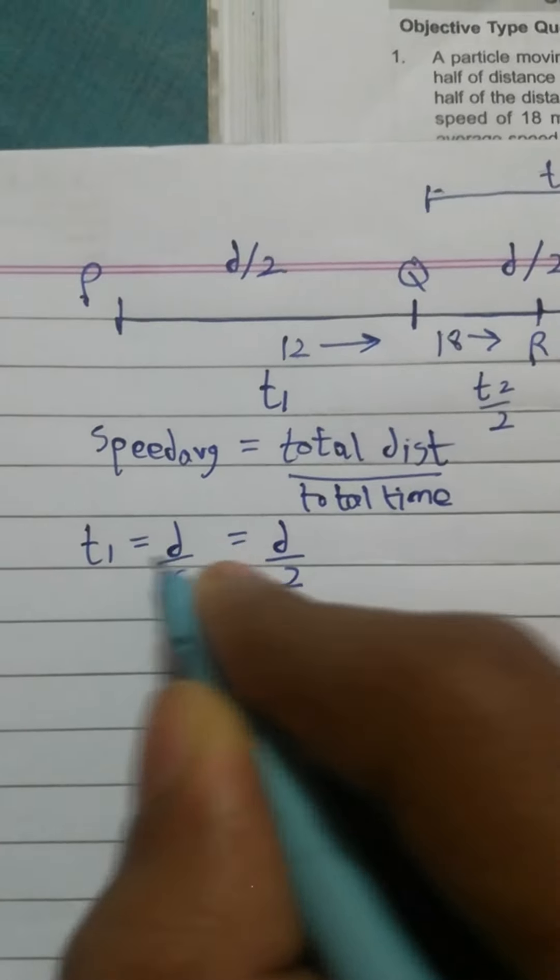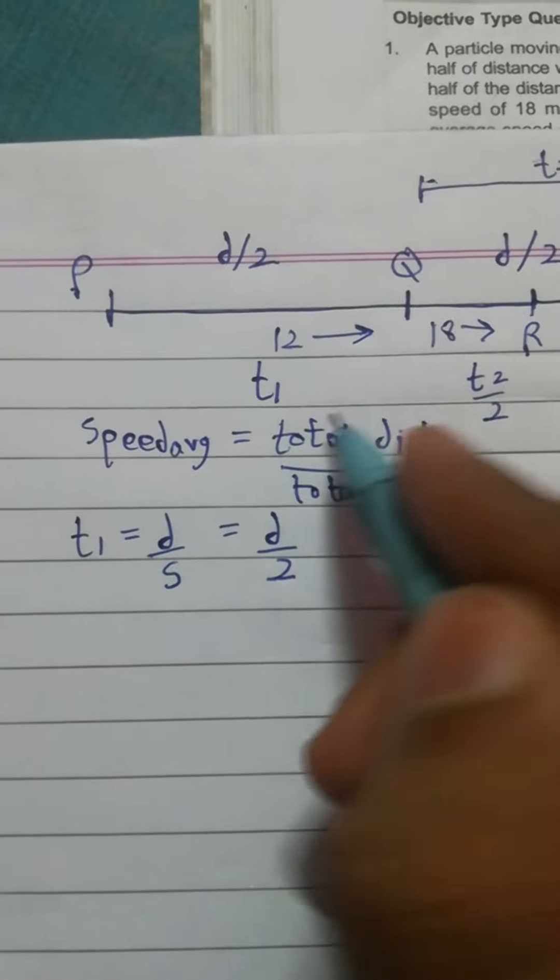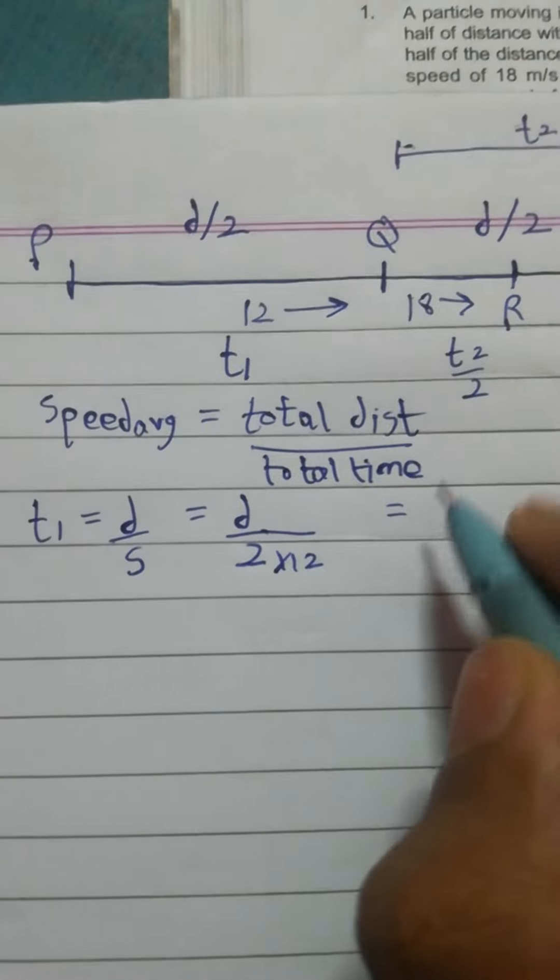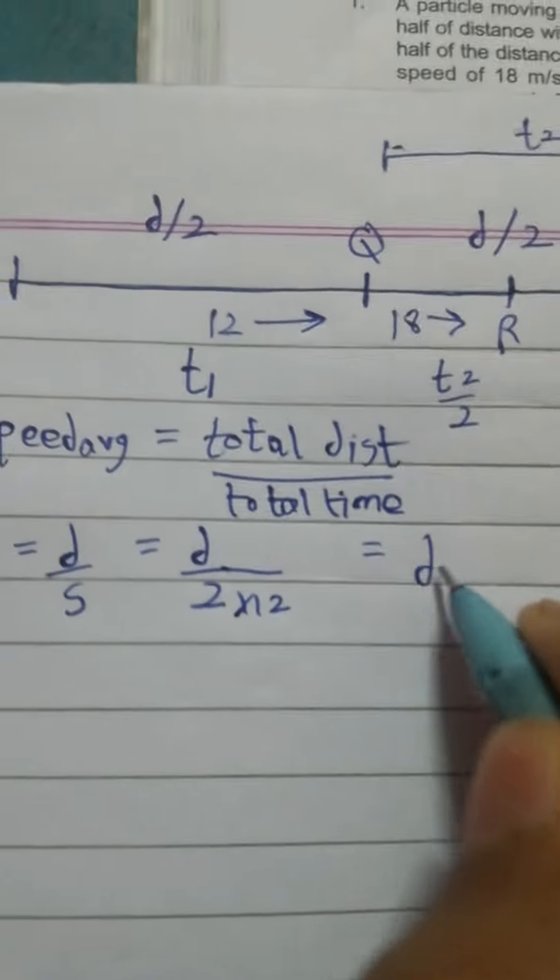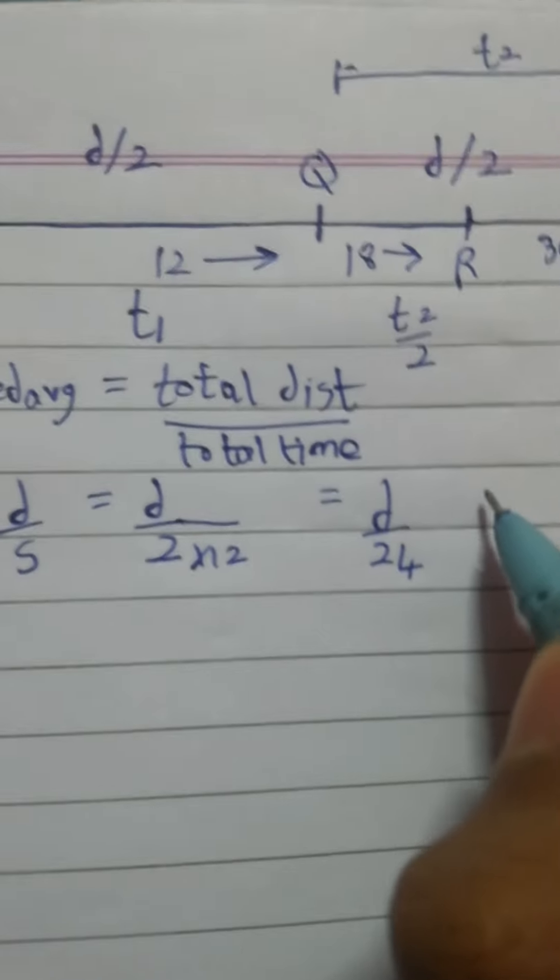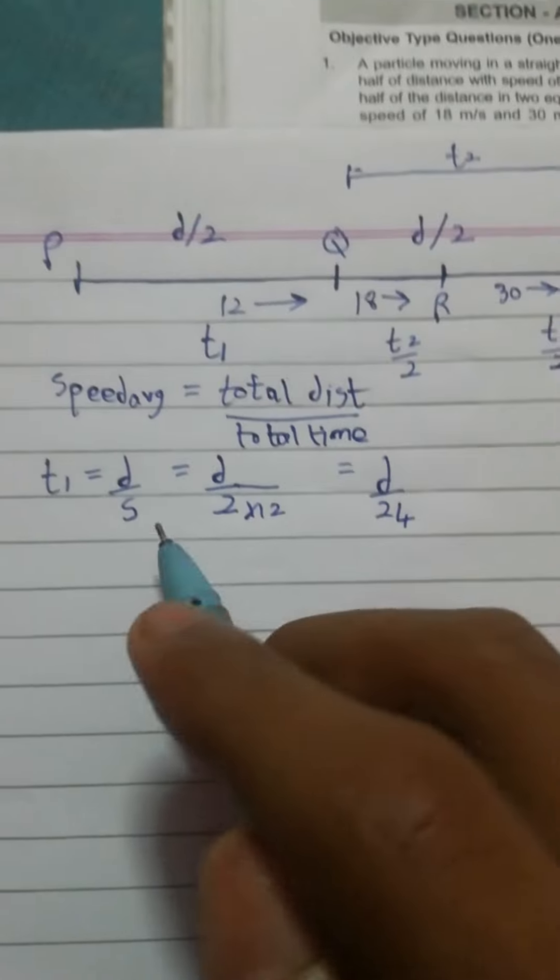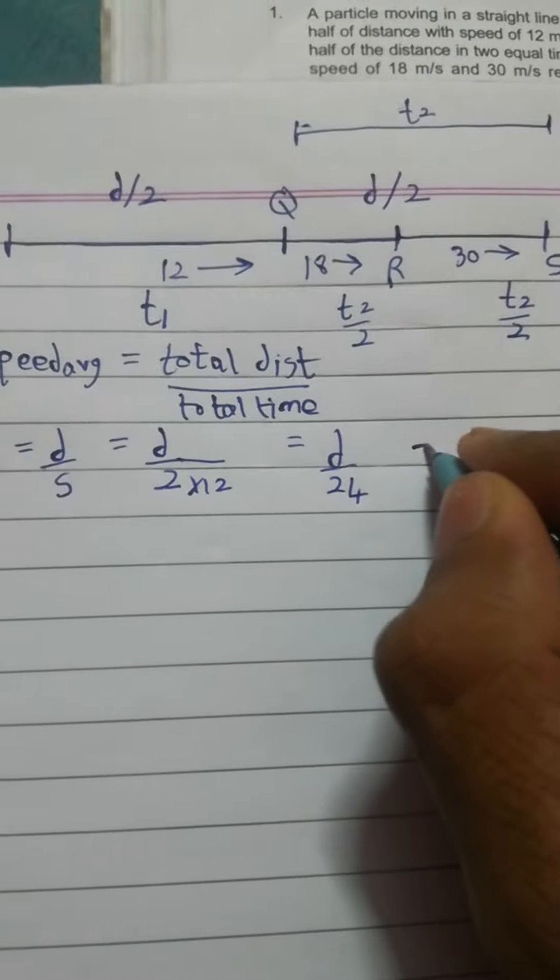Here distance is D by 2, so here D by 2 is distance covered by T1, and speed of T1 is 12, so into 12. So this is D by 24 seconds. So T1 is D by 24. I will mark it as 1.